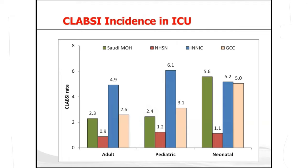Looking at the incidence of CLABSI in the ICU, this slide shows incidence in Saudi Arabia compared to benchmarks including NHSN (USA), INICC (developing countries), and GCC countries — Saudi Arabia, Bahrain, Qatar, Oman, and Kuwait. In Saudi MOH hospitals, the CLABSI rate in the ICU is around 2.3 in adults, 2.4 in pediatrics, and slightly higher in neonatal ICUs.